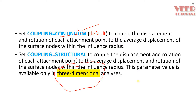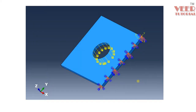Earlier we performed the analysis of a plate with a hole and applied the force on each node individually. In this example, we are going to use the coupling element and apply the load on a single master node instead, which we will perform in the next lecture.